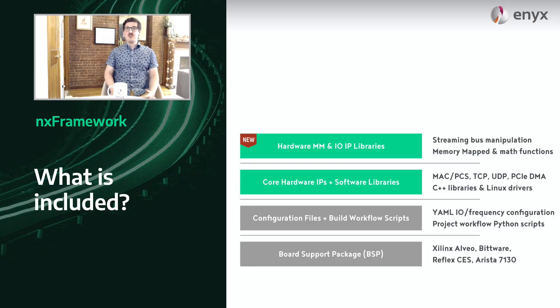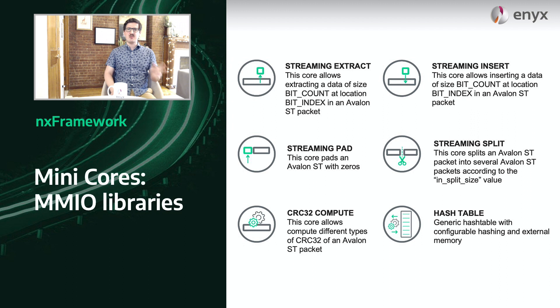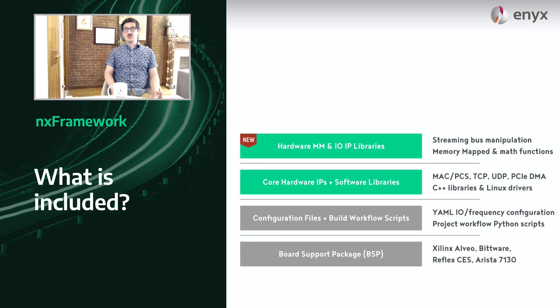But with version 5, we push this further because we provide what we think is the first standardized library of FPGA IPs. Any FPGA project will encounter the same issues: how to manipulate a streaming bus, extract data, insert data, split it, mark it; how to deal with memory buses and registers; how to deal with math functions; and how to deal with caches and memories. In version 5 of the framework, we include more than 60 IPs that we created for ourselves initially but are now available to you, that will help any FPGA developer accelerate and lower their time to market.